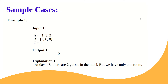Let's look at the sample cases. The arrival dates are [1, 3, 5] and the departure dates are [2, 6, 8]. The first booking arrives at 1 and departs at 2, the second arrives at 3 and departs at 6, the third arrives at 5 and departs at 8. C equals 1, meaning we have only one room available, and we need to tell whether these requests can be handled.